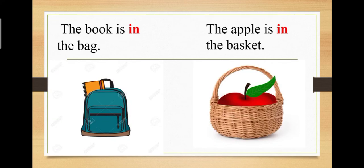Let's see other examples. Where is the book in the first picture? Yes, book kaha hai? Bag ke andar hai. The book is in the bag. In the second picture, where is the apple? Yes, apple kaha hai? Basket ke andar hai. So, the apple is in the basket.